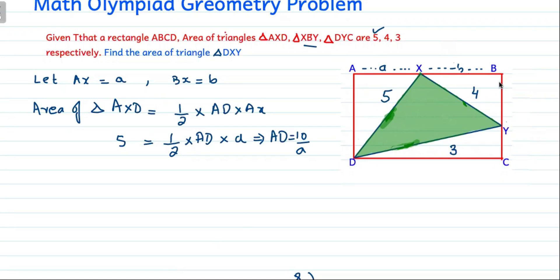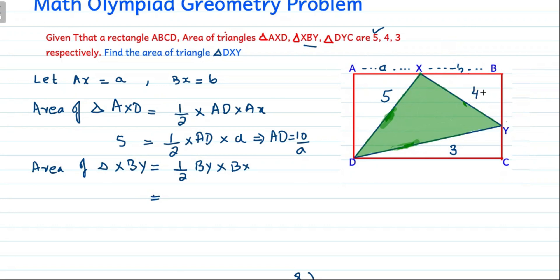Next we find the length BY in terms of A and B. We use the area of triangle XBY, which equals ½ × BY × BX. We know the area of triangle XBY is 4, so 4 = ½ × BY × B. Therefore BY = 8/B.